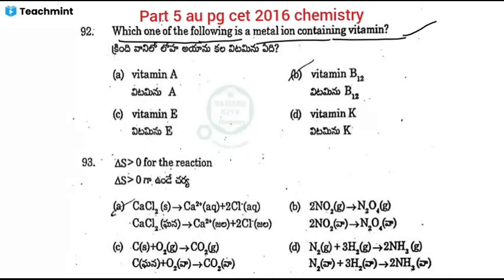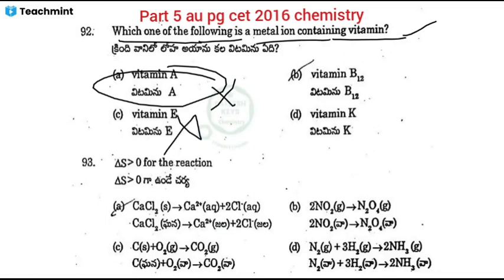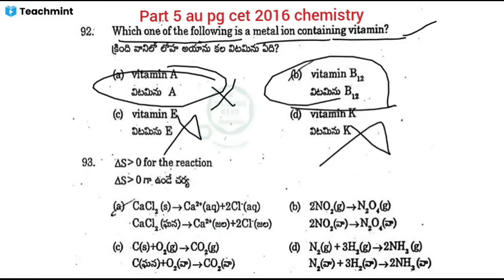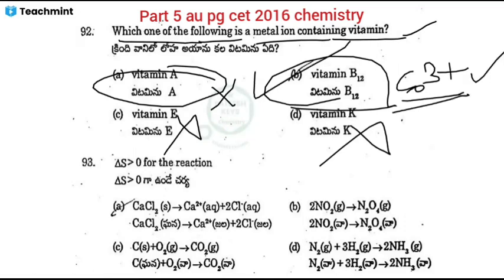Next: regarding vitamins — vitamin A and vitamin E are fat-soluble. Vitamin B includes cobalt³⁺ in its structure (as in vitamin B12). Option B is the correct answer; remaining options are wrong.